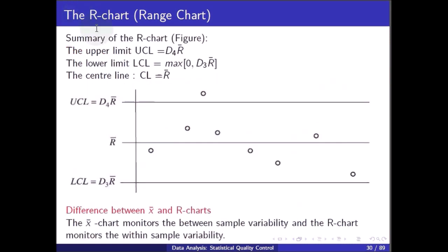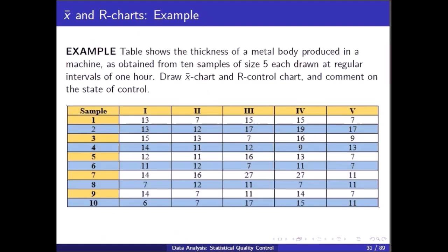Summary of the R chart: UCL = D4 * R-bar, LCL = max(0, D3 * R-bar), center line = R-bar. The key difference between the two charts: the X-bar chart monitors between-sample variability, while the R chart monitors within-sample variability.